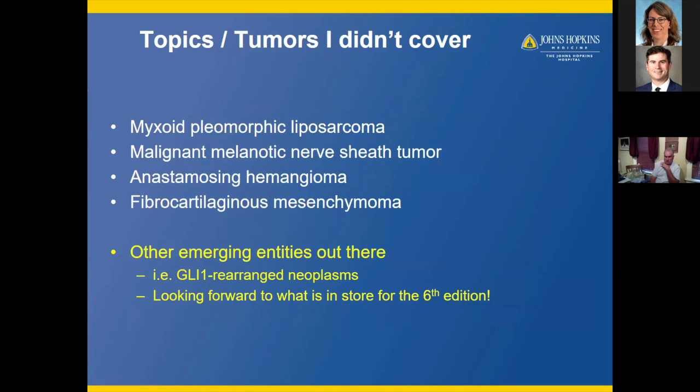Tumors I didn't cover include myxoid pleomorphic liposarcoma, malignant melanotic nerve sheath tumor, anastomosing hemangioma, and fibrocartilaginous mesenchymoma. There are other emergent entities out there, such as the GLI1-rearranged neoplasms. I'm certainly looking forward to what's in store for the sixth edition. Thank you again, and I'll be happy to take any questions.